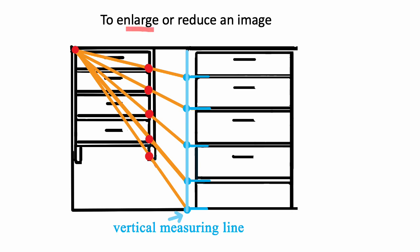So here's an example of enlarging or reducing an image. So I chose a corner and I connected that with these orange lines to important points on this small bureau and then continued the line down to a vertical line, which we're going to call the vertical measuring line. And these blue points represent the important parts of the original drawing. And then you draw horizontal lines from these new points to draw your new bureau.